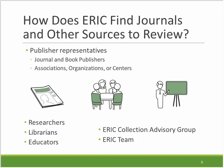How does ERIC find journals and other sources to review for indexing? The sources are either suggested to us or we locate them. We receive the majority of requests for review from a journal publisher representative or editor, and we also hear from representatives of associations, organizations, or centers. Publishers providing content indexed in ERIC are based in the U.S. and from around the world — some are large publishers such as Sage, Taylor & Francis, and Wiley, and others are small publishers such as a professional association or a university college of education. Requests for review are also received from researchers, librarians, educators, and other ERIC users. ERIC has a collection advisory group, and the ERIC team is regularly searching and identifying new sources to review.